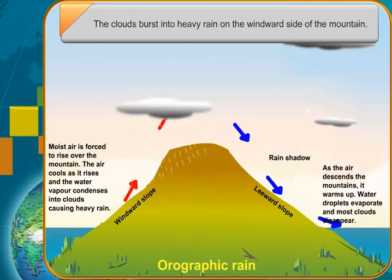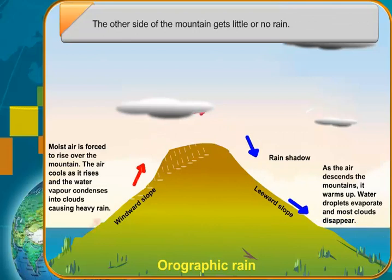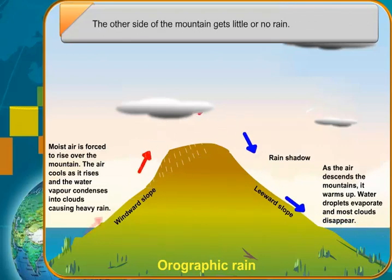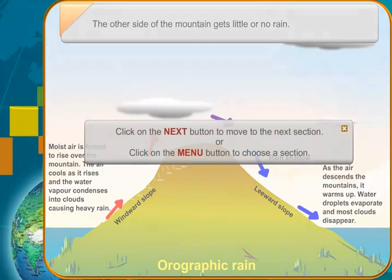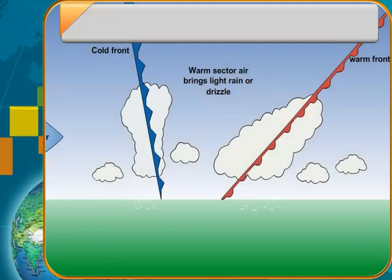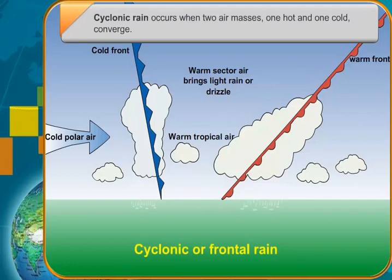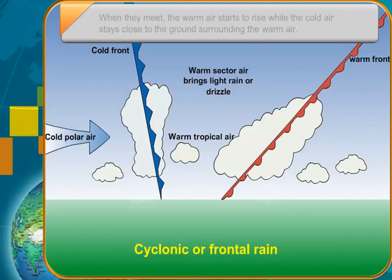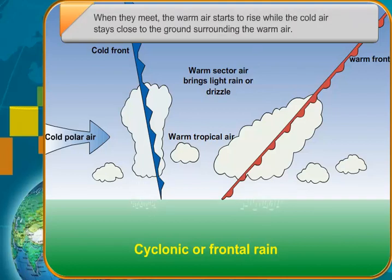Cyclonic rain occurs when two air masses, one hot and one cold, converge. When they meet, the warm air starts to rise while the cold air stays close to the ground surrounding the warm air. A barrier is formed along which the warm air keeps rising. The centre of the barrier has low pressure, surrounded by high pressure.